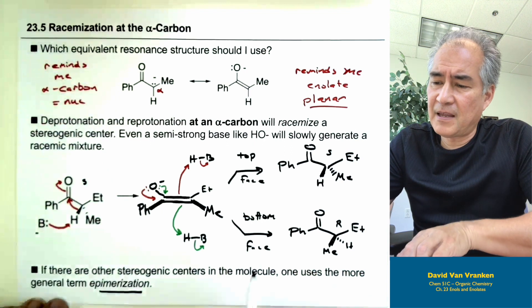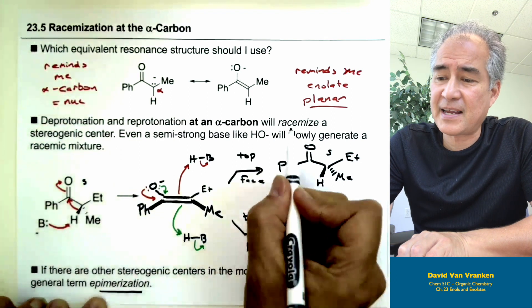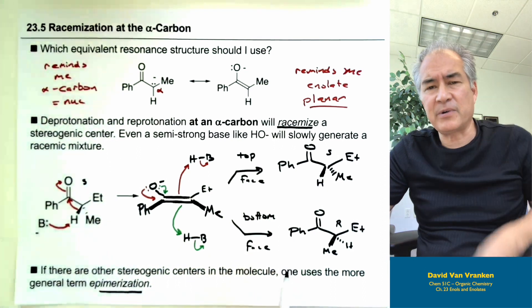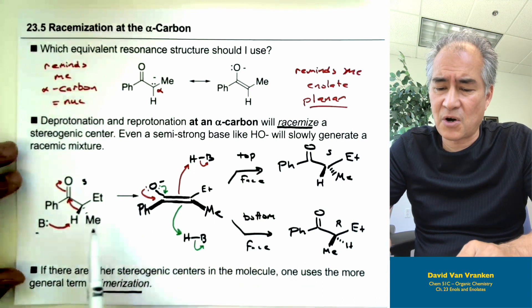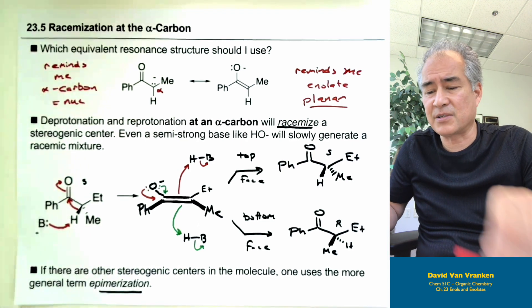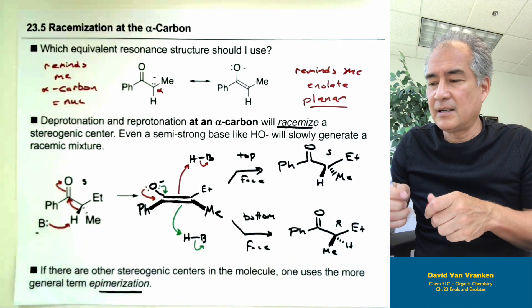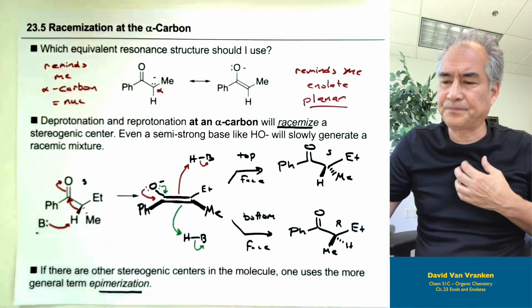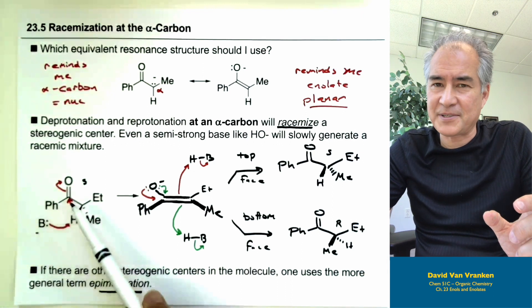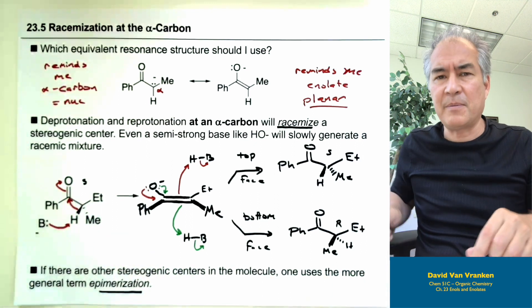If you only have one stereocenter in the molecule, the more specific term is racemization — you start off with one enantiomer and the process gives you the other. If you have two stereogenic centers and only one of them is changing, those would be diastereomers, so the more general term is epimerization. You have to be careful when you make stereogenic centers next to carbonyls — don't treat those with sodium hydroxide or something that would allow racemization or epimerization to occur.